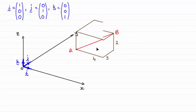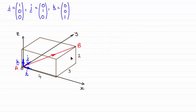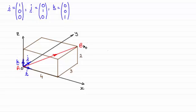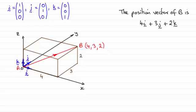But if I bring this back to the origin here, then the coordinates of B are defined. They're going to be 4 in the x-direction, 3 in the y-direction, and 2 in the z-direction. And the position vector of B, that is the vector from the origin to B (let's call it OB), the position vector of B is going to be 4i plus 3j plus 2k.